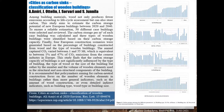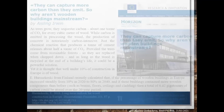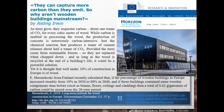Ali Amiri and colleagues found that the carbon storage capacity of buildings is not significantly influenced by the type of building, the type of wood, or the size of buildings, but rather by the number and volume of wooden elements used in structural and non-structural components. They can capture more carbon than they emit — so why aren't wooden buildings mainstream? Only 10% of construction in Europe is made of wood.